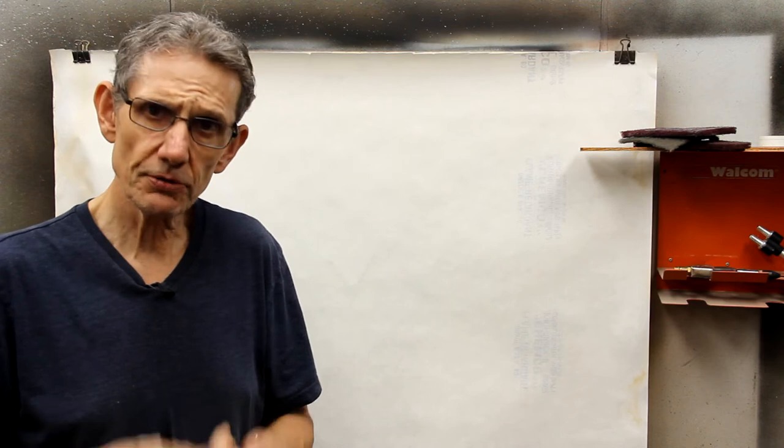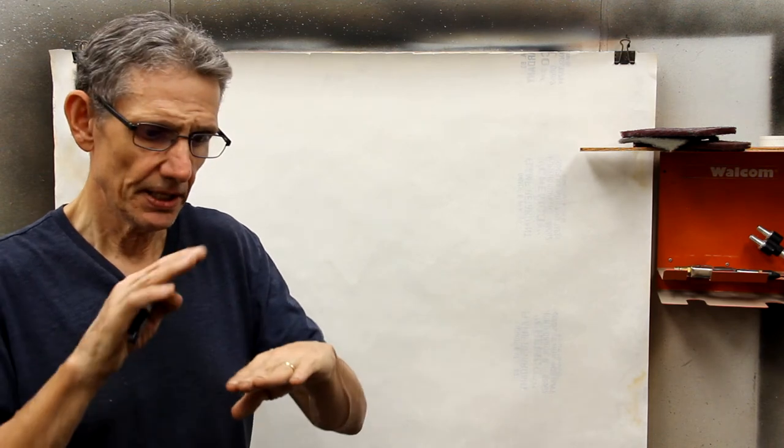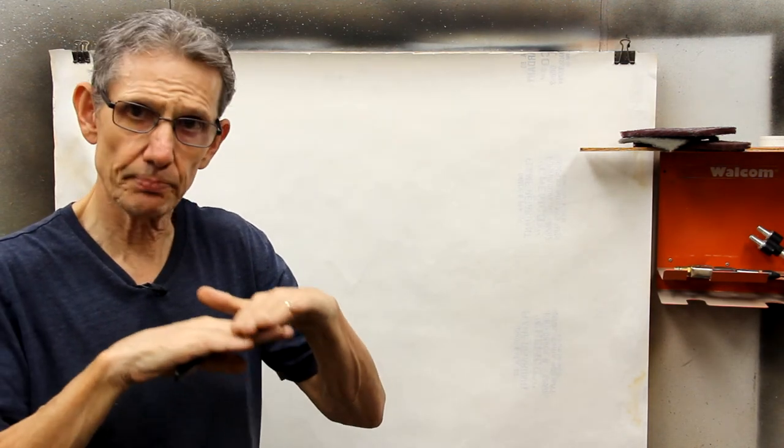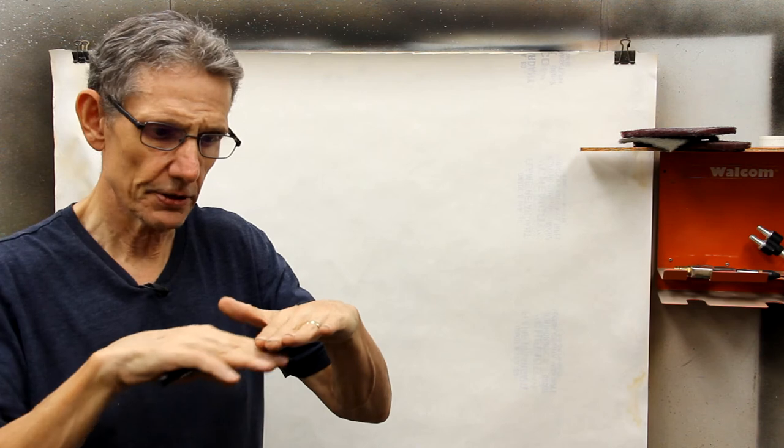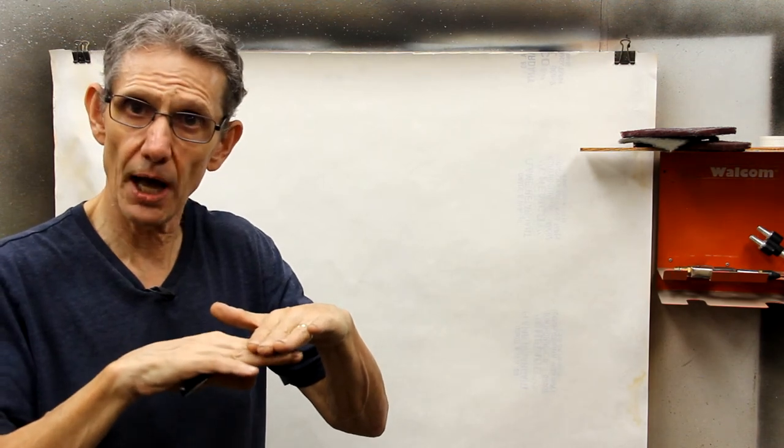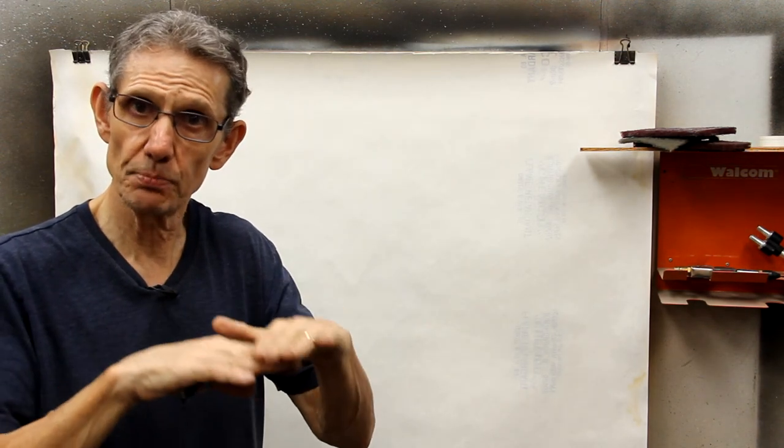It also affects the way that we rub out a guitar because when we start the rubbing out process of sanding, then wet sanding, and then buffing, we're actually removing finish. In the case of catalyzed urethane, if one coat doesn't burn into that prior coat, there's going to be a layer or a line that's going to be visible when you buff and rub out the finish. And that's really important.